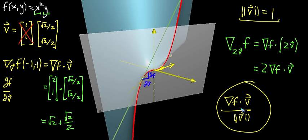Some people even define the directional derivative to include this normalization — dividing out the length of the vector. I don't prefer that, because I think it comes from thinking of rates of change only in the slope-of-a-graph context. Graphical and visual intuition are great, and you should always try to think visually. But with multivariable functions, the graph isn't the only way — you can more generally think about a nudge in the v direction. See the video on the formal definition for more details, but this is a good way to get a feel for what the directional derivative is all about.